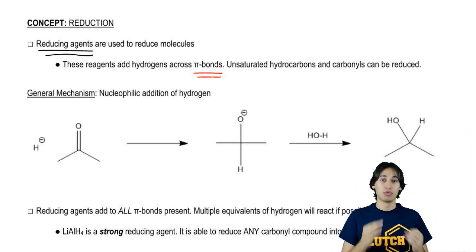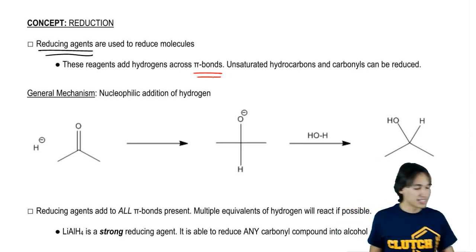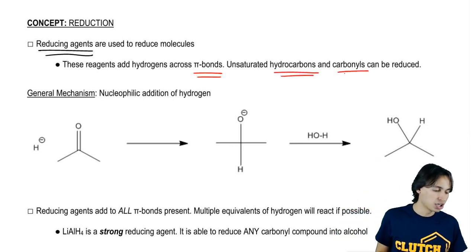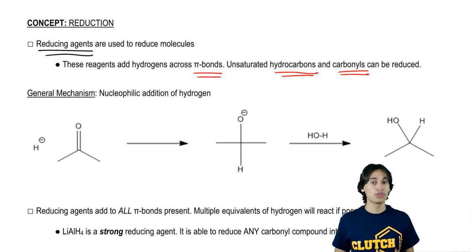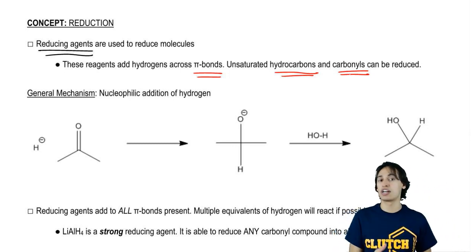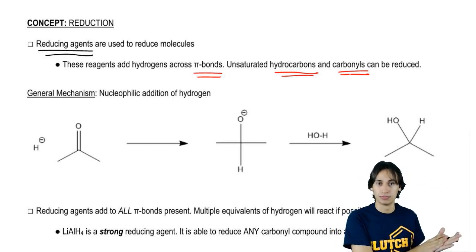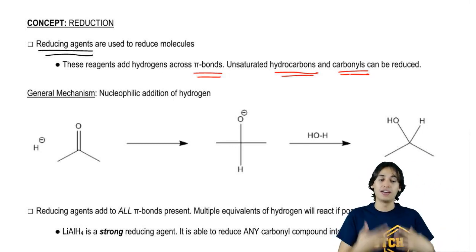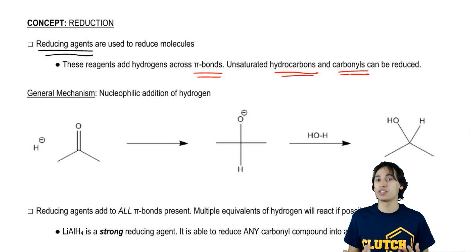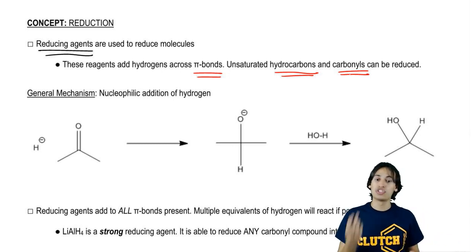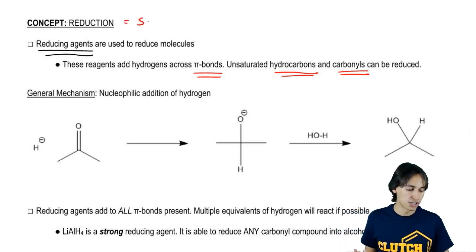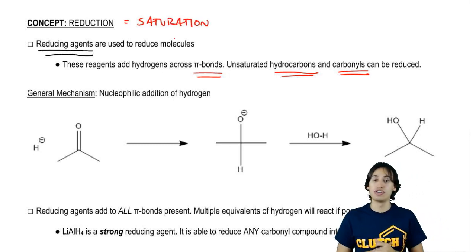The definition of reducing agent is anything that's going to be used to reduce or add hydrogens to a molecule. These reagents are all going to add hydrogens across pi bonds. We're taking double bonds, triple bonds, and adding hydrogens to them. Unsaturated hydrocarbons and carbonyls are able to be reduced. Remember that unsaturated means I don't have the total amount of hydrogens possible. As we add hydrogen, we're actually saturating, so reduction is a form of saturation.